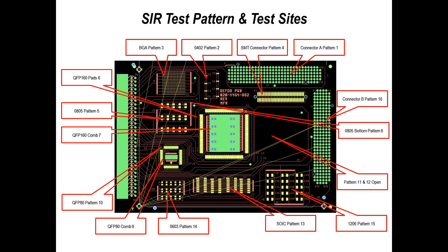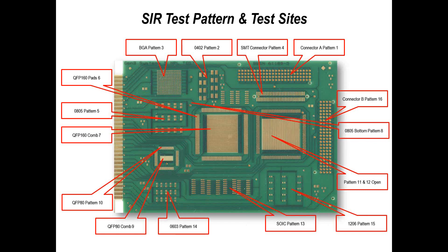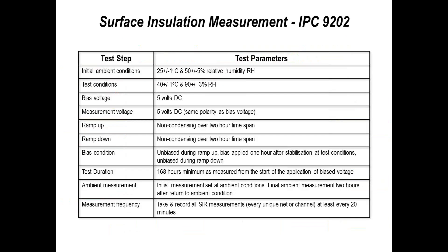This is a close-up view of one SIR test pattern — a very old test pattern used for solder resists and solder paste materials, one of the original test coupons used in the industry. Now more and more people want to use patterns representative of the assembly process. On this B52 test pattern, I've highlighted where the different test points are and what styles of components are used. The nice thing about the test pattern is you can modify it yourself to add different components you want to test.